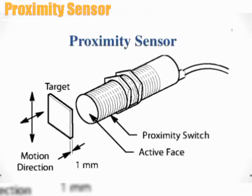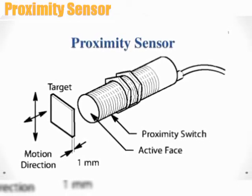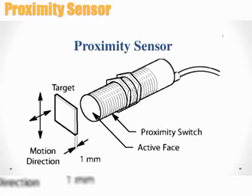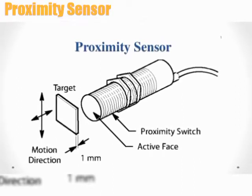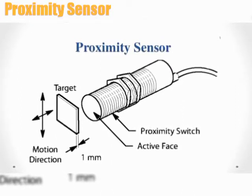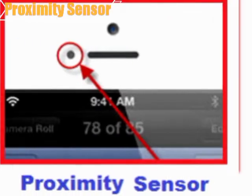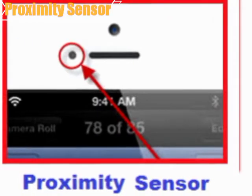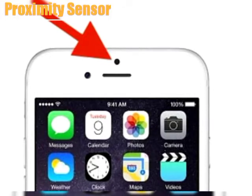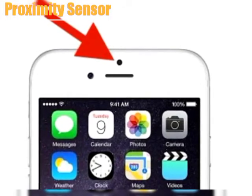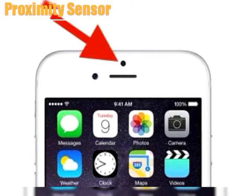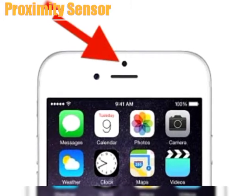Proximity sensor. This sensor makes use of an infrared LED and IR light detector to calculate the distance between the phone display and a nearby object. The proximity sensor is typically used while making or attending a call — it allows you to turn off your display during a call when you hold your phone to your ear.